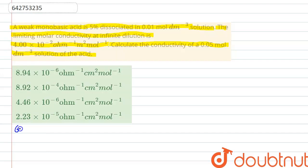From here we can write that given is α = 5%, which will be equal to 0.05. This is the value of alpha. And our concentration c = 0.01 mole per decimeter cubed.